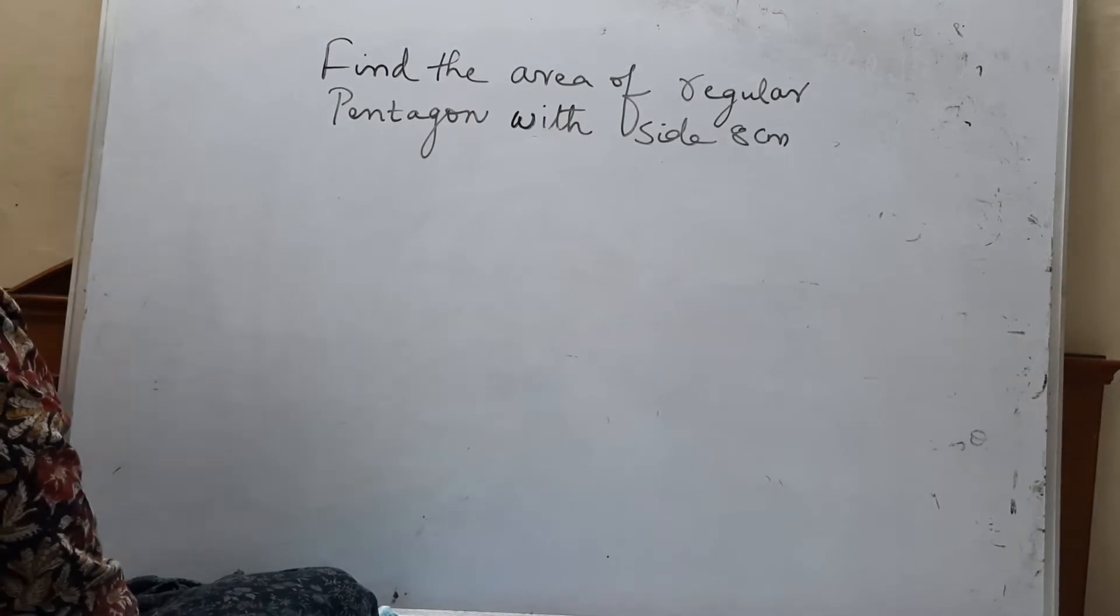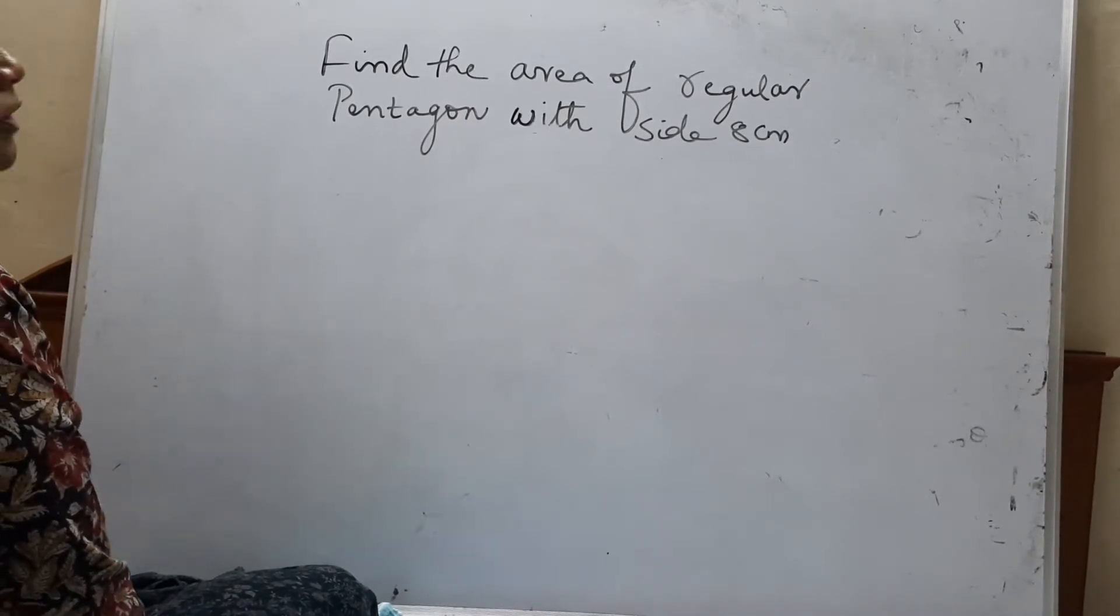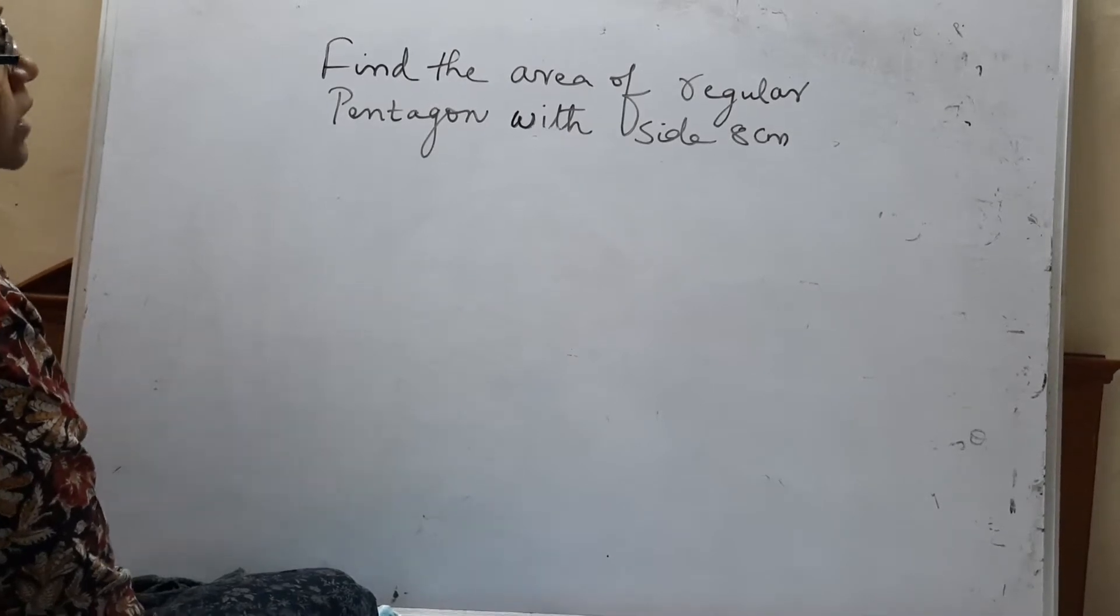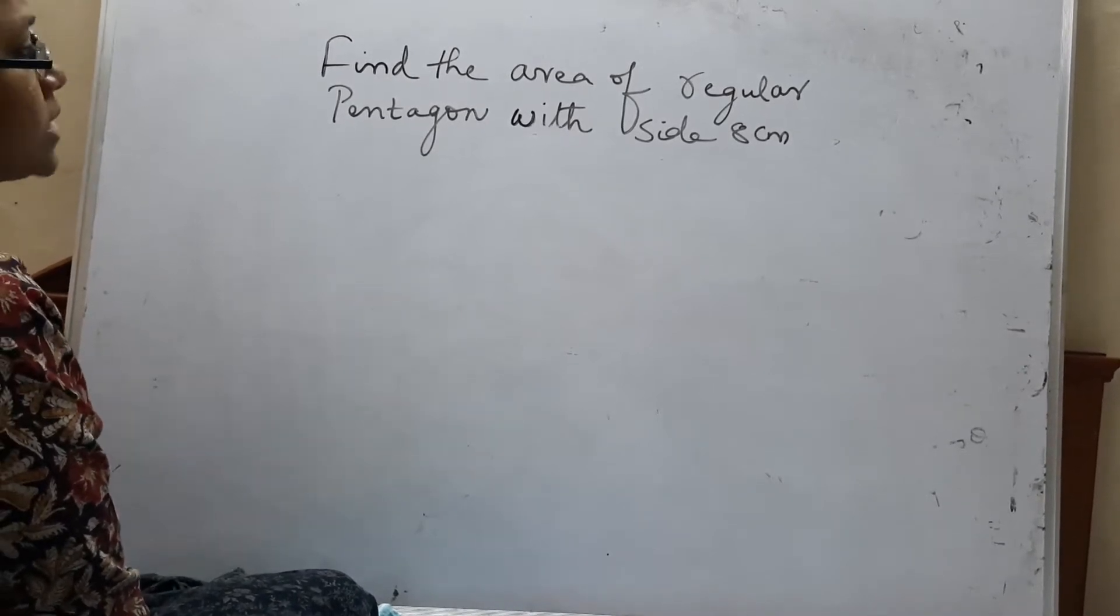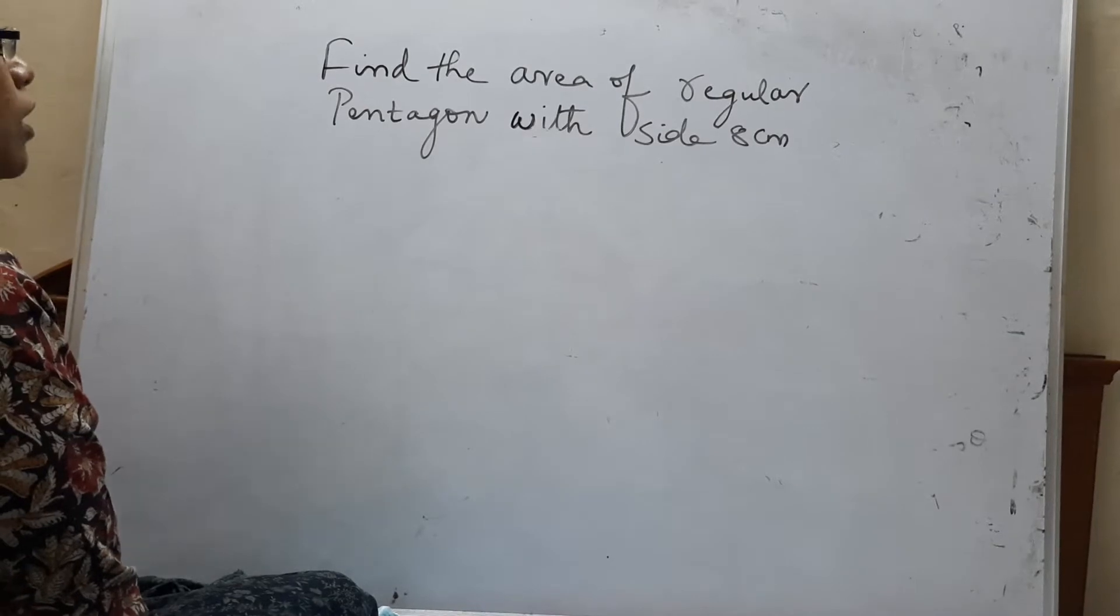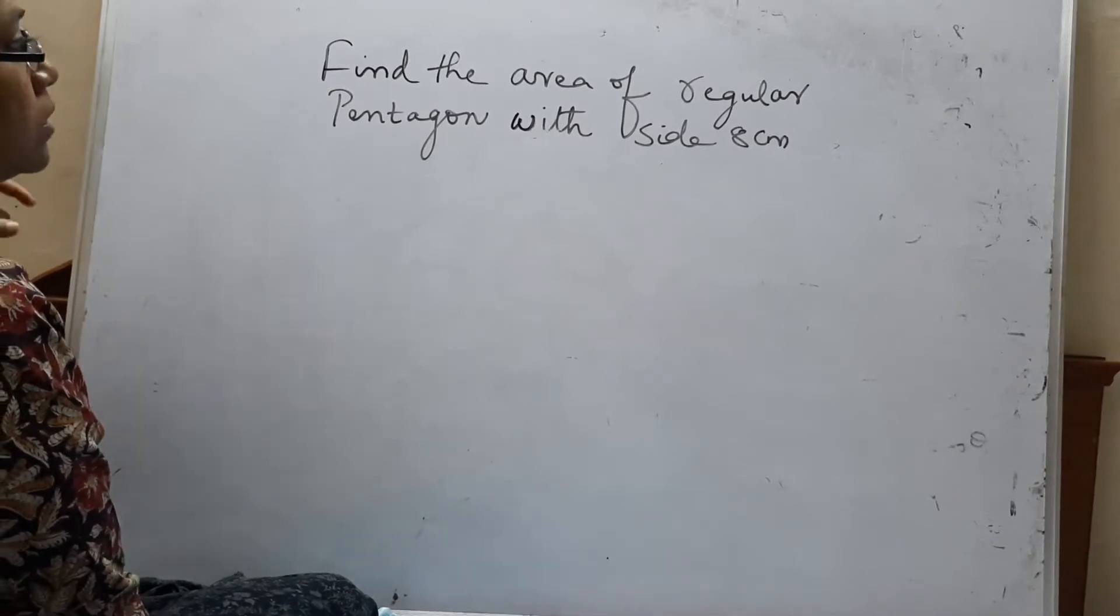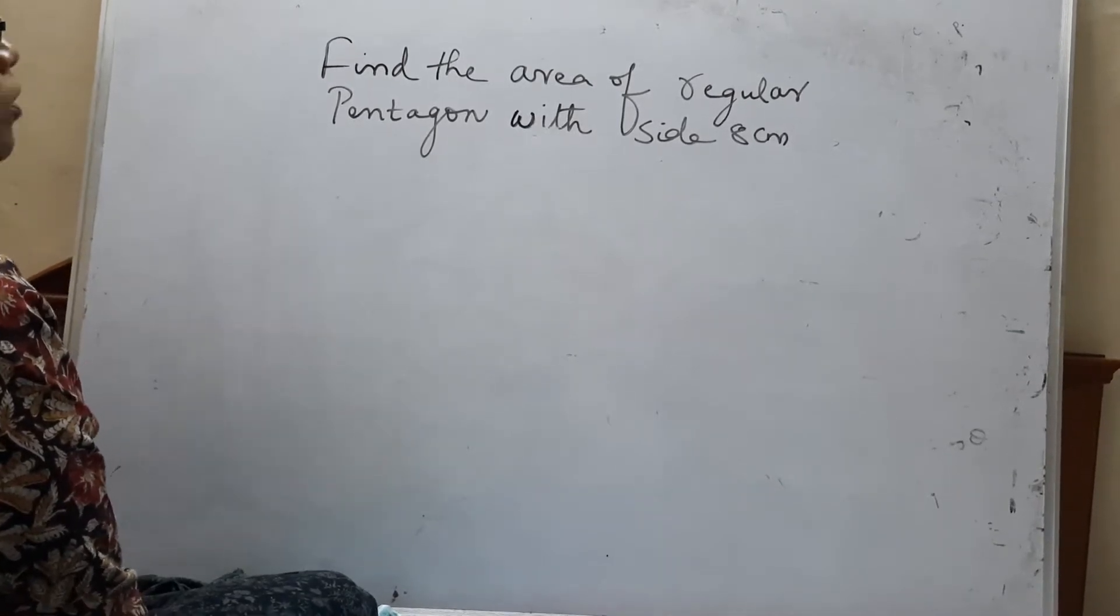We know that a pentagon is a polygon with 5 sides. Why is it named a regular pentagon? Because all sides are equal in a pentagon. The word regular comes into picture when all sides are equal.